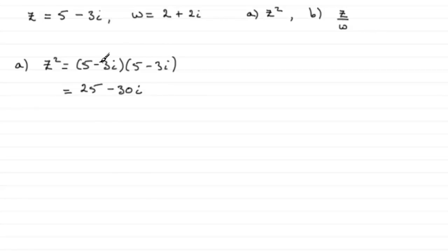And then you've got minus 3i times minus 3i so it's going to be plus 9i squared. Knowing that i squared is minus 1, that gives us 25 minus 9 which is 16, and then you've got here minus 30i.